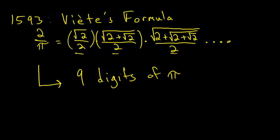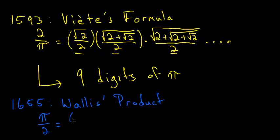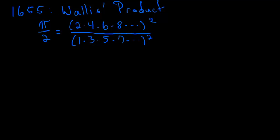About 60 years after Viète, in the year 1655, we have the mathematician John Wallis, who found what is known as Wallis's product, that pi divided by 2 is equal to the product of all of the even numbers squared divided by the product of all of the odd numbers squared. Though his product converges very slowly, he didn't use it to find many digits of pi.